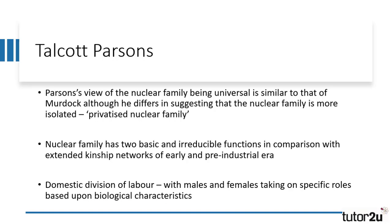His view of the nuclear family being universal is quite similar to that of another theorist in the functionalist tradition, G.P. Murdoch. Parsons also suggested that the nuclear family was universal, but he differed slightly from Murdoch by focusing on the American nuclear family, which he saw as more isolated. He argued that there existed a privatised nuclear family, one that was self-sufficient from extended kinship networks and utilised other social institutions to provide some of the functions of the family.